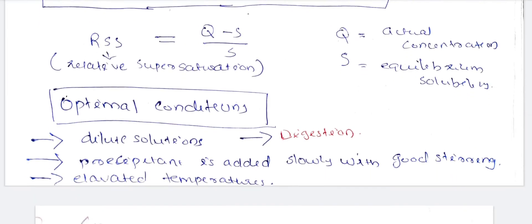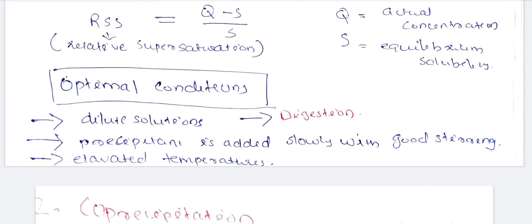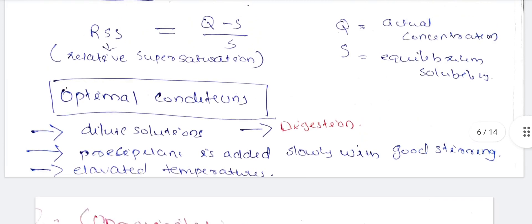The optimal conditions for precipitation include: dilute solutions, digestion — which means keeping the precipitate for a long time, possibly one or two days. The precipitant is added slowly with good stirring. We use elevated temperature. These optimal conditions — dilute solution, digestion, slow addition of precipitant, and elevated temperature — help control the quality of the precipitate formed.